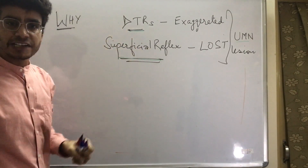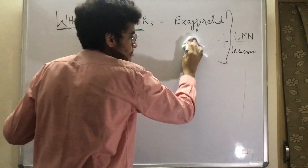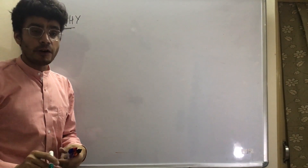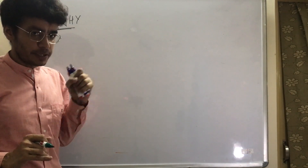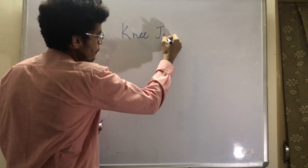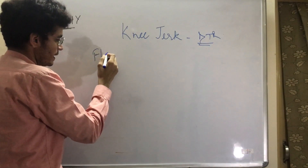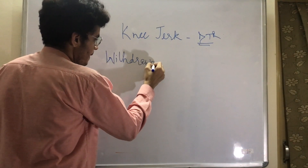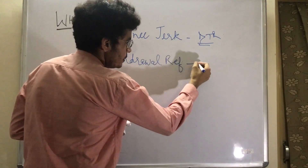Today's class explains why superficial reflexes are lost while deep tendon reflexes are exaggerated. To understand this, we go back to the basis of classification. Reflexes are classified as deep or superficial based on the sensory receptor. For example, the knee jerk is a deep tendon reflex, while the withdrawal reflex is a superficial reflex.